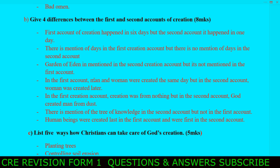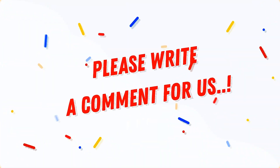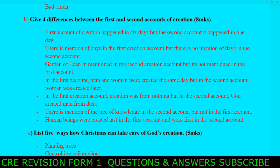Number three, God is referred to differently in the two accounts. Number four, in the second account woman was created later. Number five, in the first creation account creation was from nothing, but in the second account God created man from dust. Number six, there is a mention of the tree of knowledge in the second account but not in the first. Finally, human beings were created last in the first account but first in the second account.